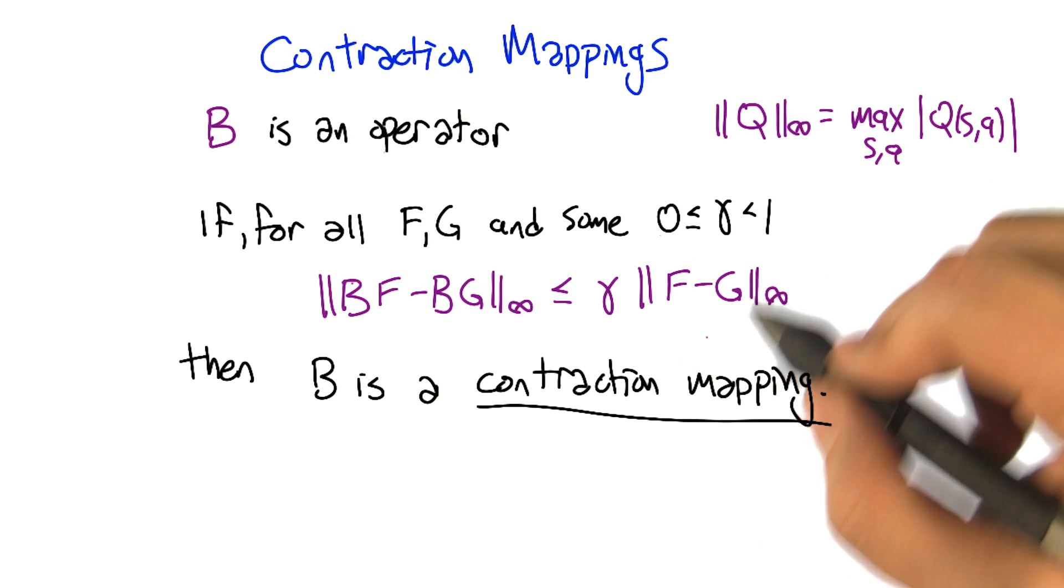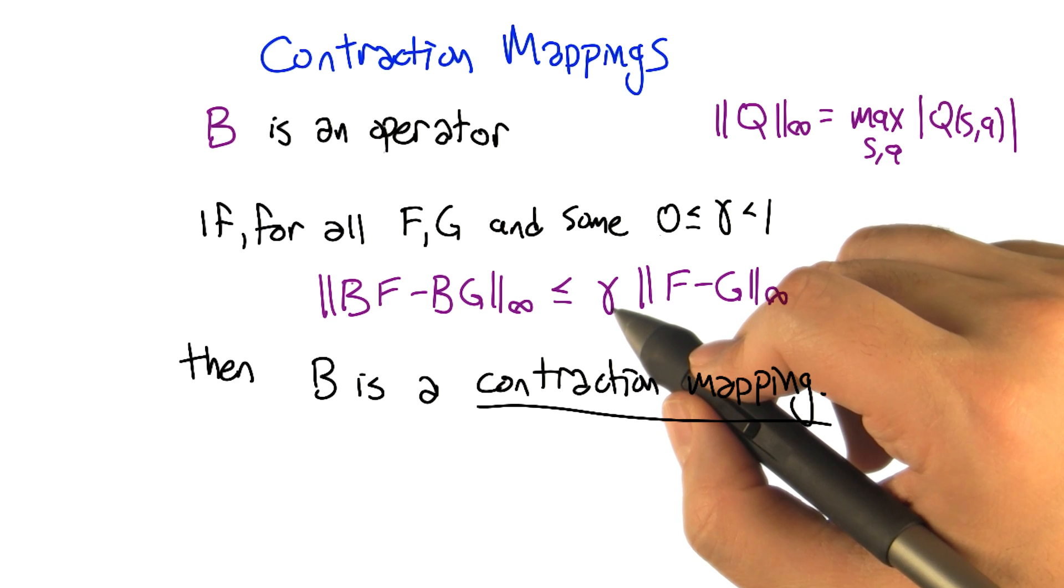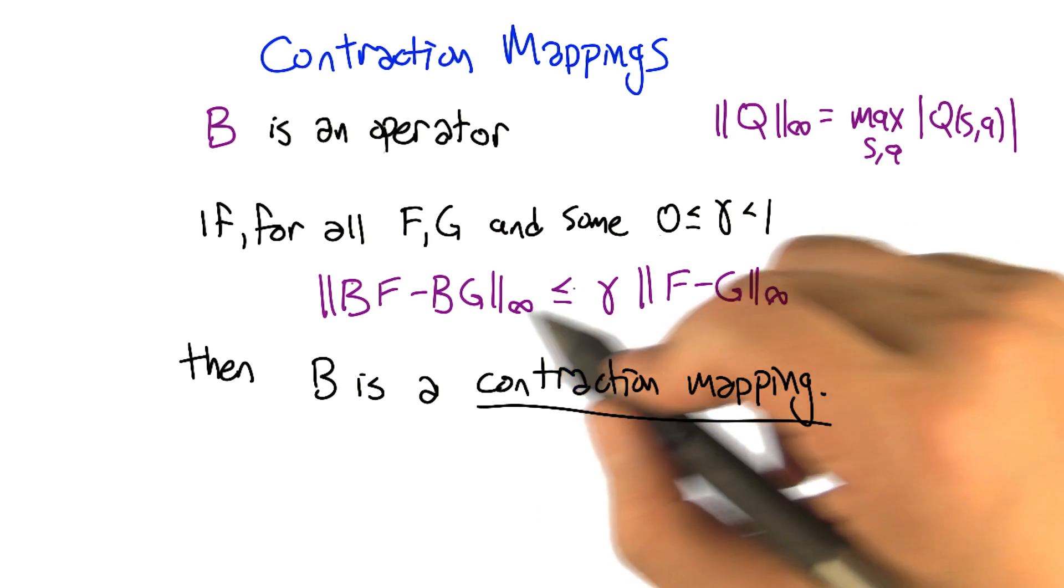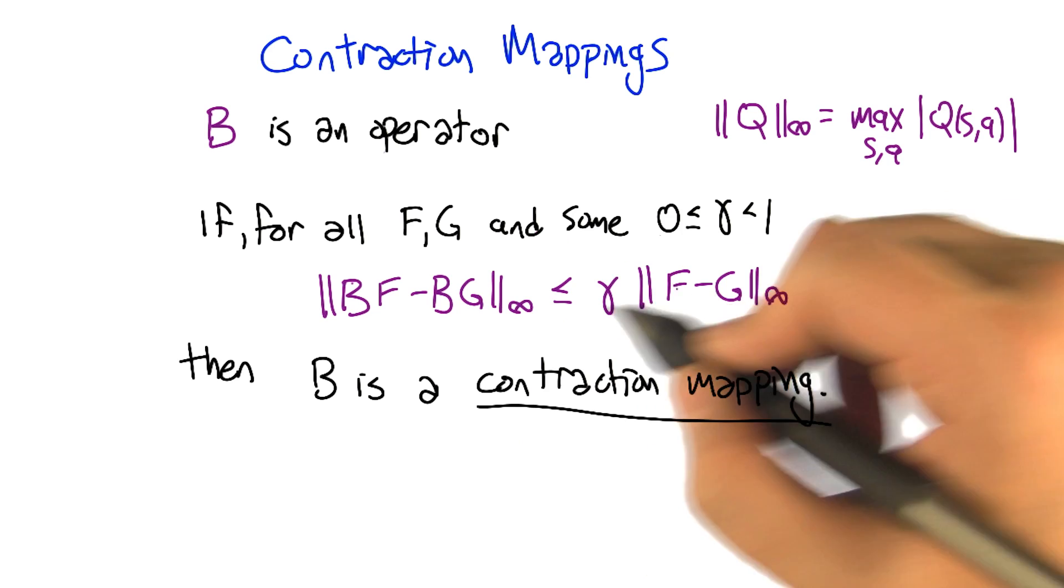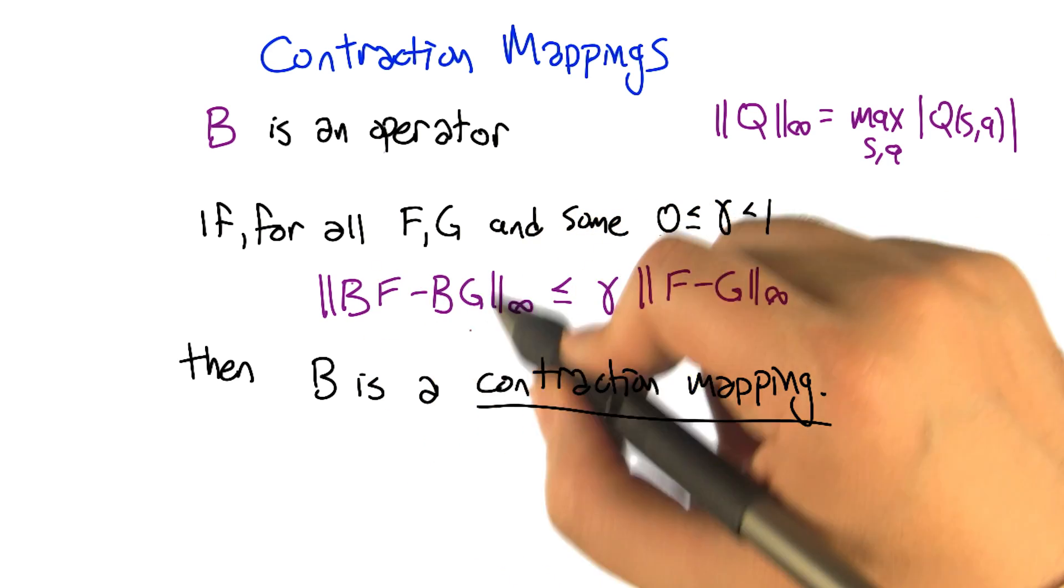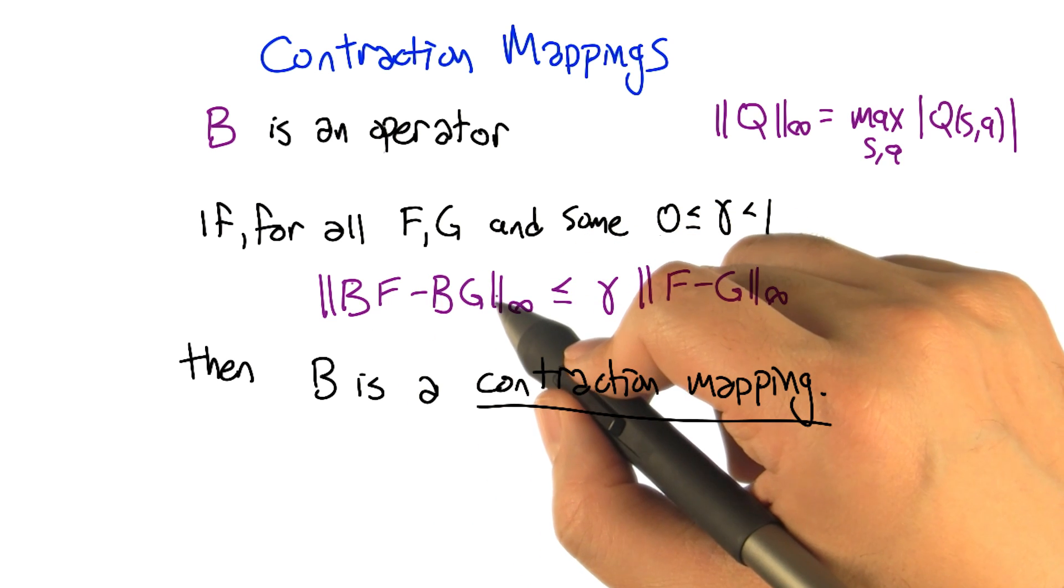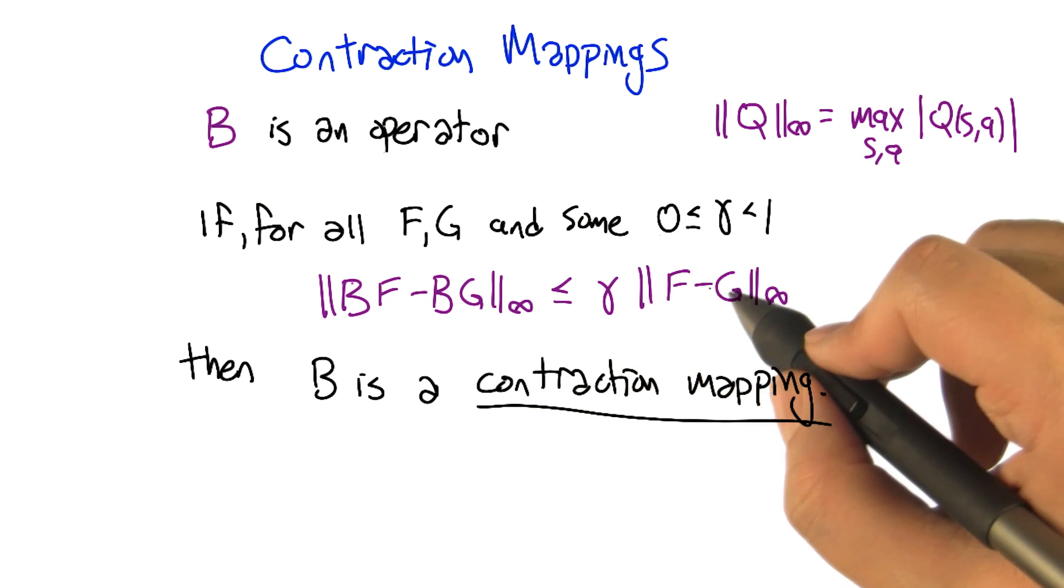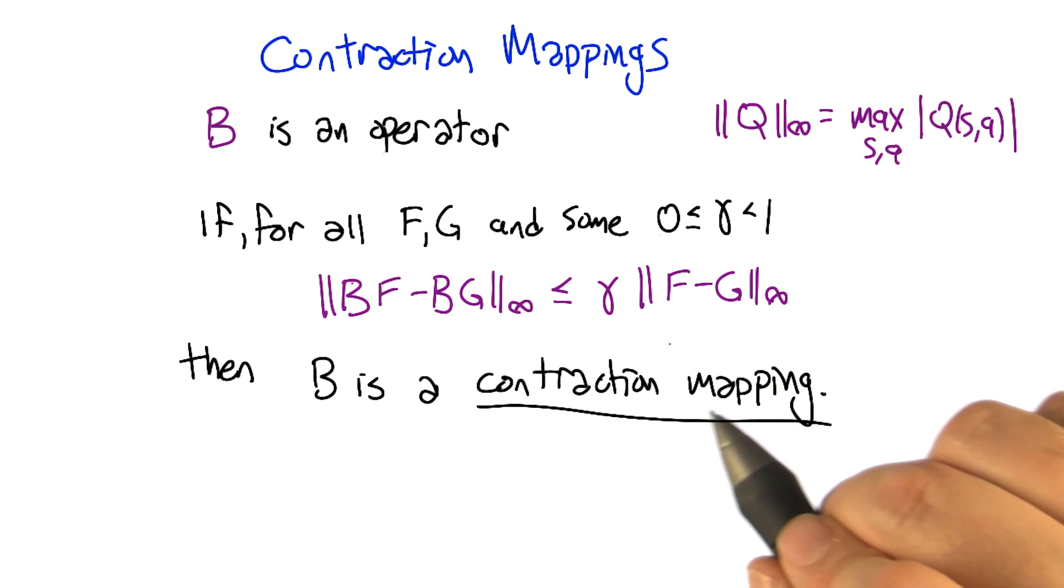Whatever that largest difference is, we're going to multiply it by something that makes it even smaller. And we're going to say that, for it to be a contraction mapping, it has to be the case that if you apply that mapping to F and you apply that mapping to G, the distance between the resulting functions is even closer together than they started. And that makes it a contraction mapping.